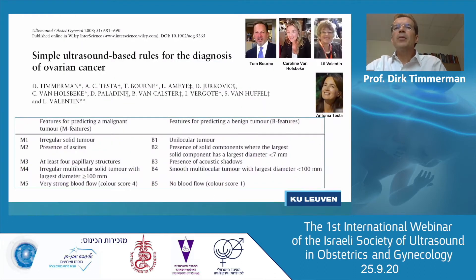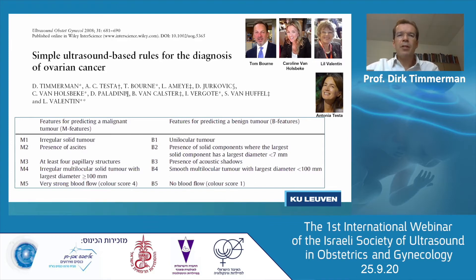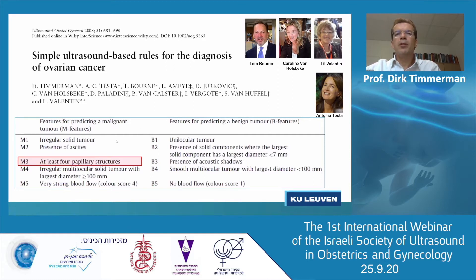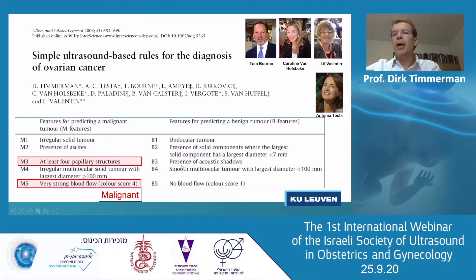We developed the simple rules, published in 2008, in the era before computers were used in clinical practice and before we had the apps. For this, we have features of malignant tumors and benign features. If you have one malignant feature — for example, at least four papillations — and another malignant feature, very strong blood flow, then you can say the tumor is most likely malignant, provided there are no benign features. On the contrary, if you have only benign features and no malignant features, then it's probably a benign tumor.